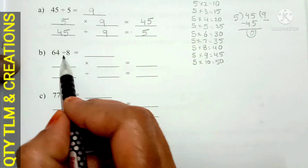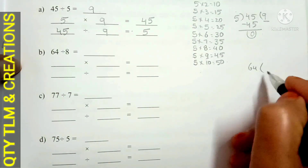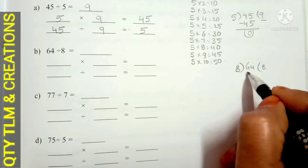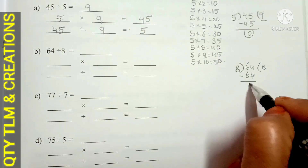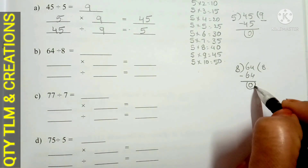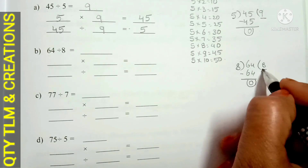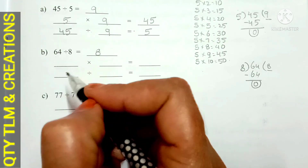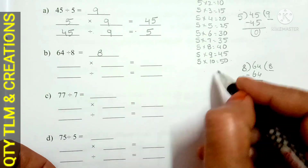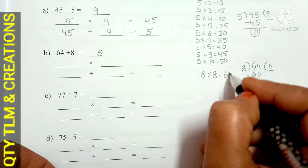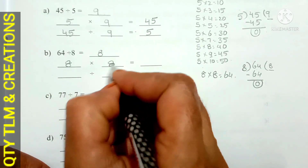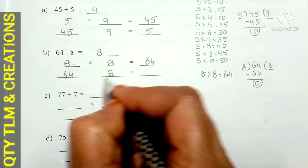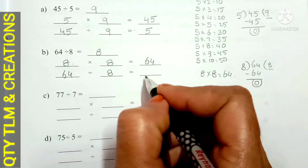Next, B. 64 divided by 8. 8 divides 64 for 8 times. 8 eights are 64. Subtract 64 from 64, that is equal to 0. Remainder is 0, quotient is 8. So 64 divided by 8 is equal to 8. Multiplication fact: 8 eights are 64.